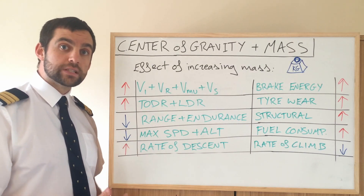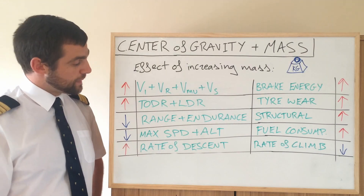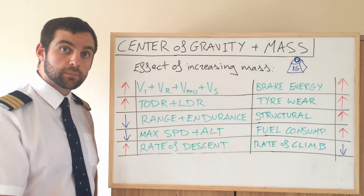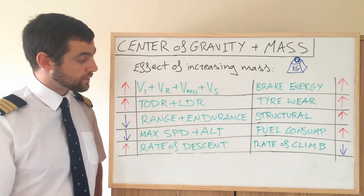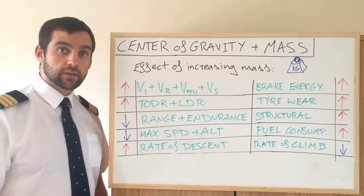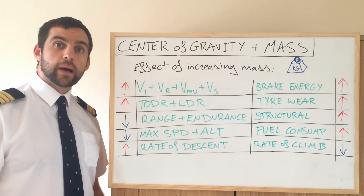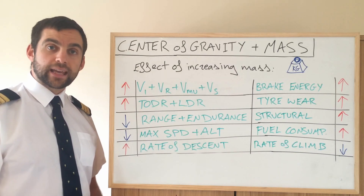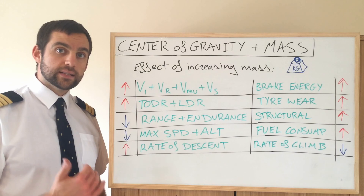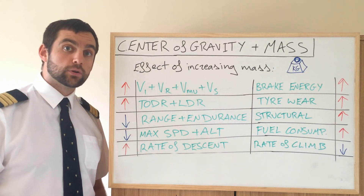If we increase mass, the takeoff run and landing distance required are always going to be larger. We have more mass to stop and more mass to take off, requiring greater speeds in both situations. Range and endurance is going to decrease because greater mass requires a greater angle of attack, which generates more drag. The maximum speed and maximum altitude also decrease because performance is decreased — the aircraft cannot overcome the extra drag created from the extra angle of attack needed to maintain that weight in the air, so it cannot travel at its max speed and cannot climb as far.